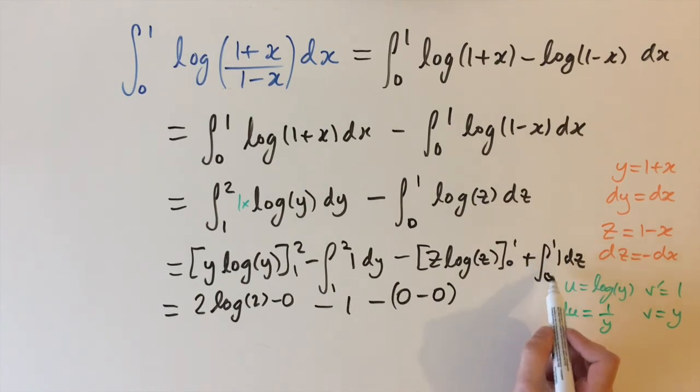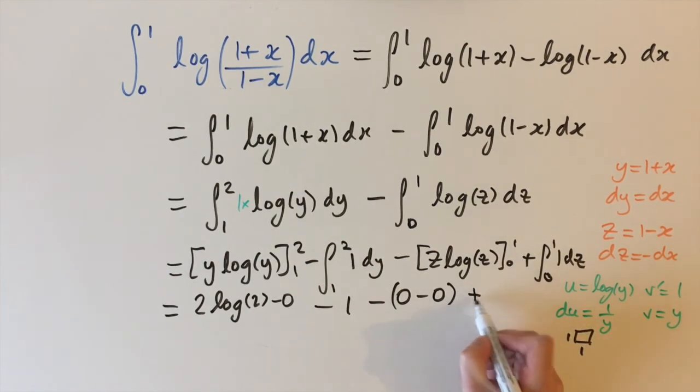And then again integrating 1 between 0 and 1 that's just the area under the line y equals 1. And we have the limits here in 1 so it's like the area of a square with length 1 and 1. So this is also plus 1.